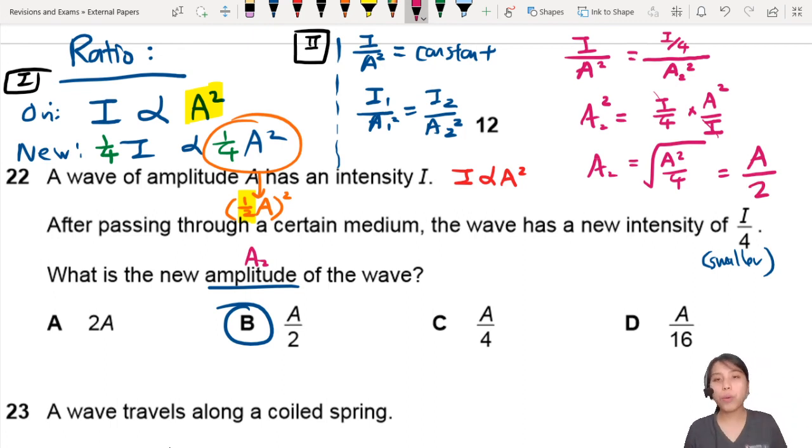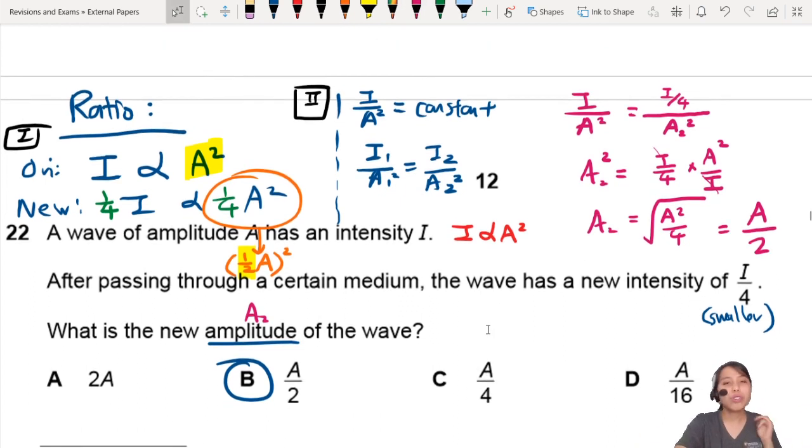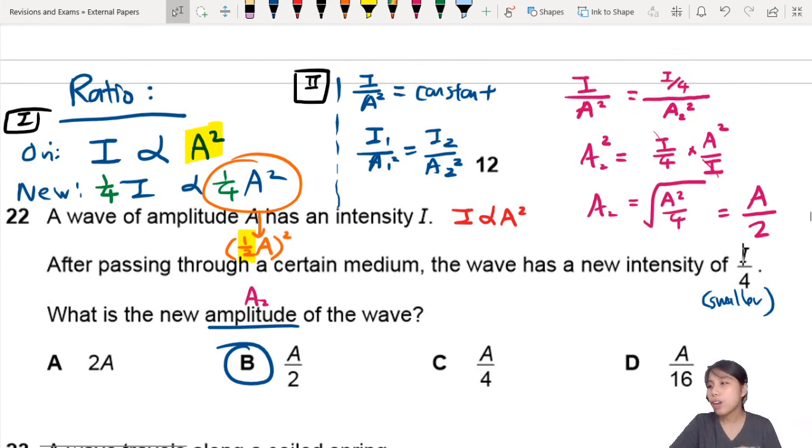So both methods can work. Which one makes more sense to you? You choose that method and you do it. If you know how to use both, even better. So that's how you can deal with intensity. When you see intensity, probably you have to use a ratio. Just remember to include A squared in your ratio as well. So that's all for this question. I will see you in the next one.